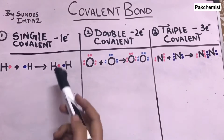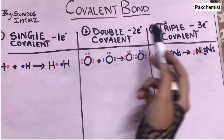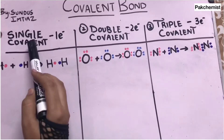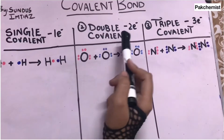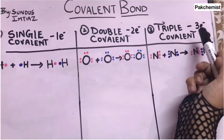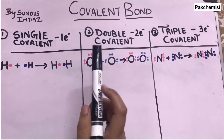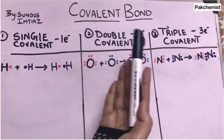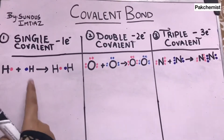There are three types of covalent bond: single covalent bond, double covalent bond, and triple covalent bond. The difference is that in a single covalent bond the atoms share one electron, in a double covalent bond the atoms share two electrons, and in a triple covalent bond the atoms share three electrons with each other.